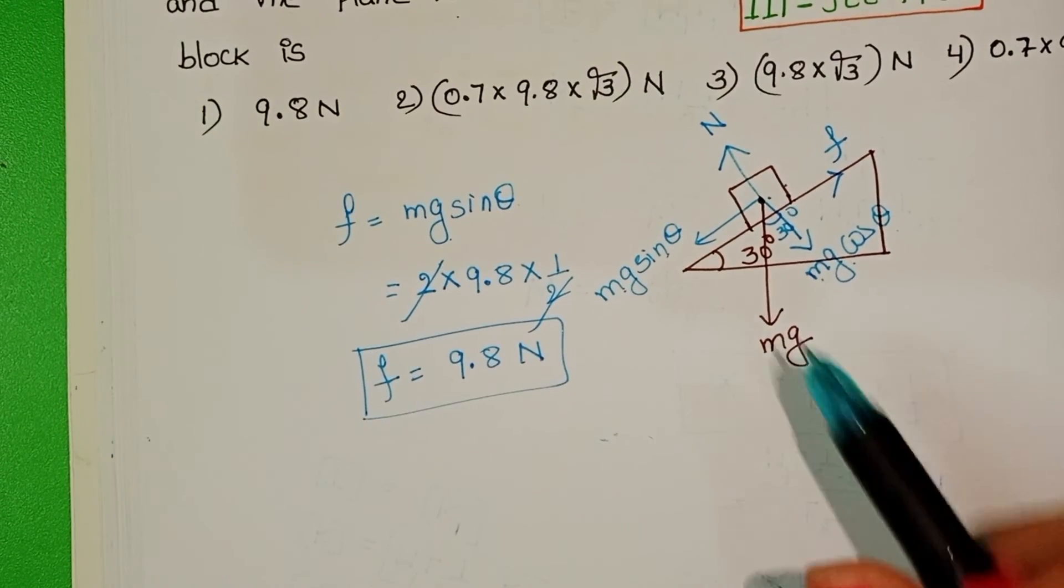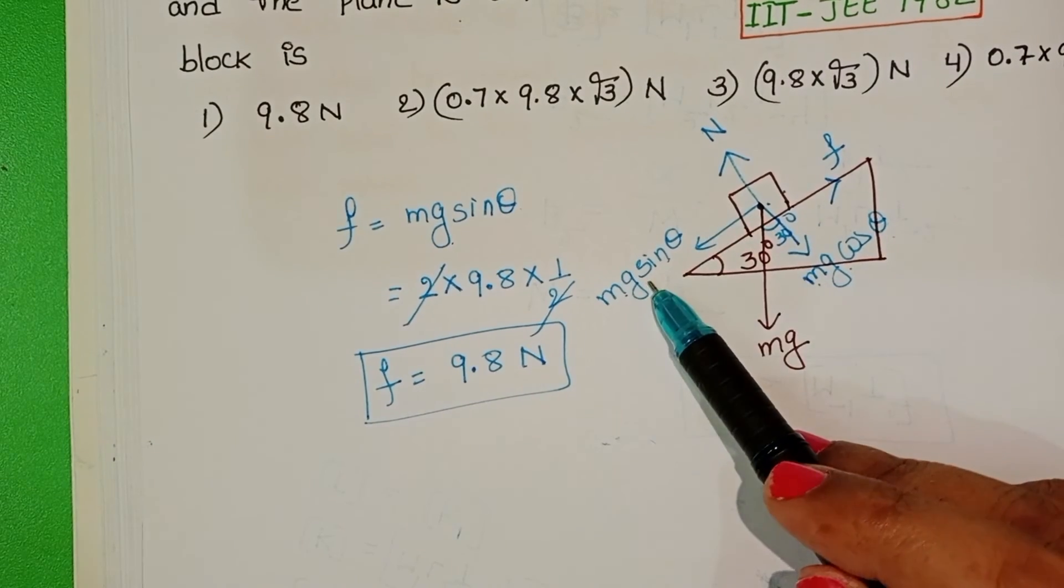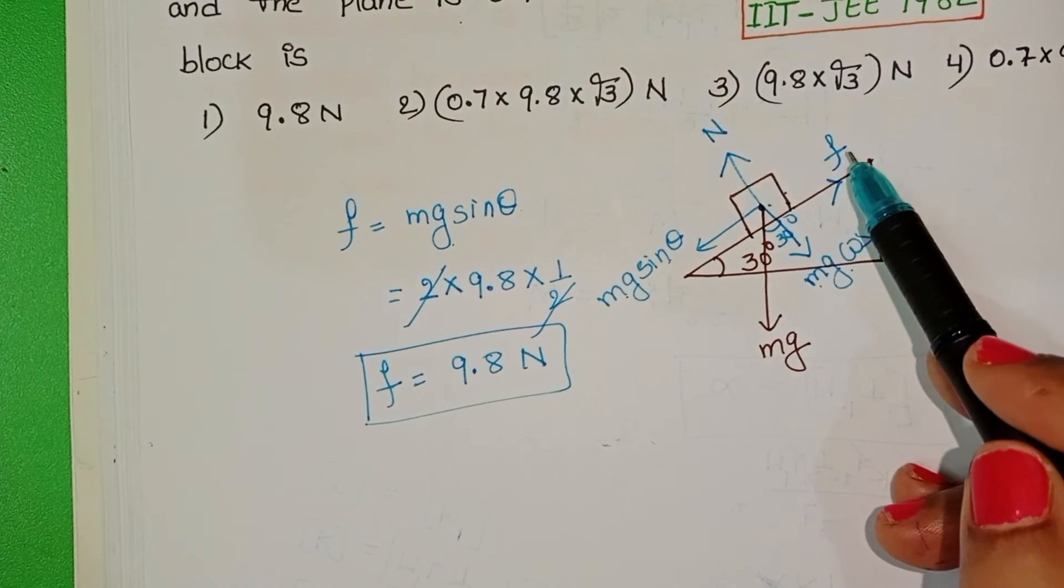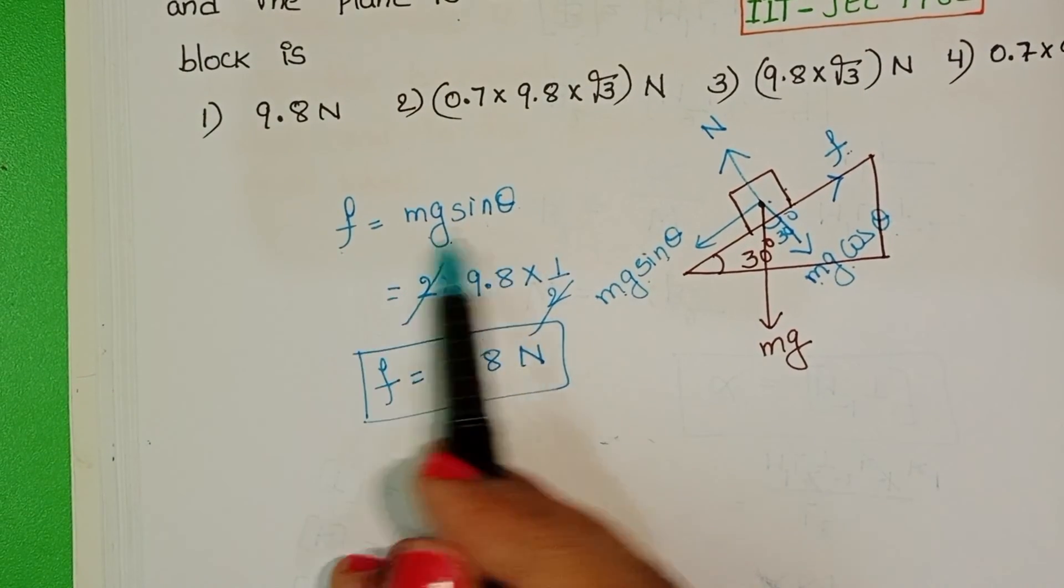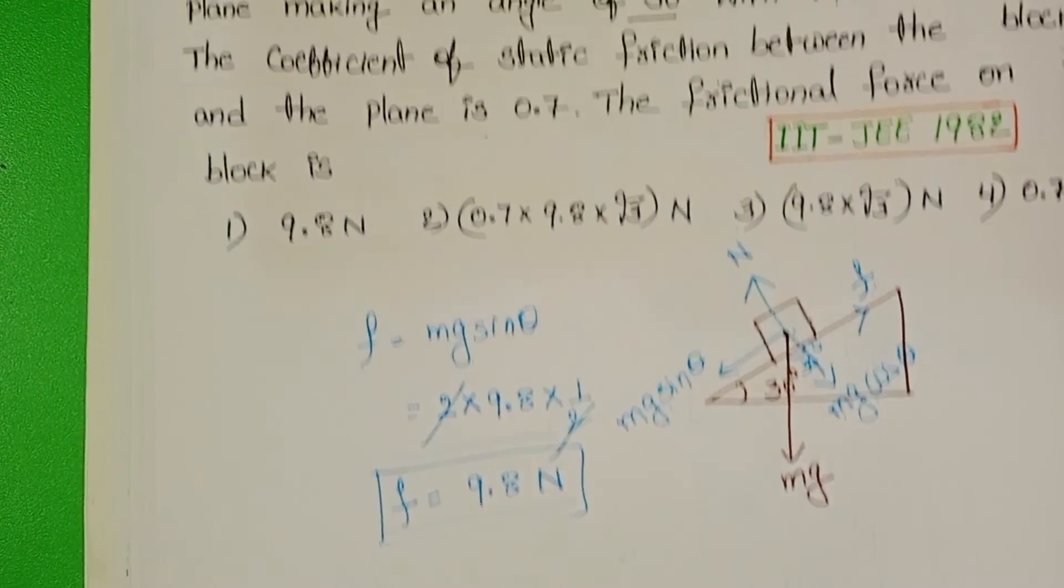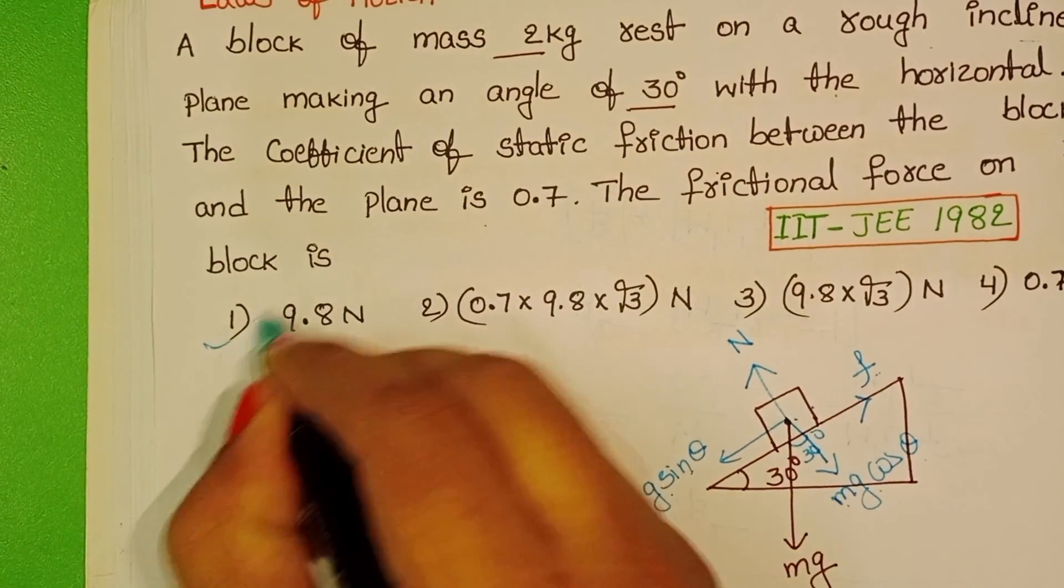Whenever block is at rest position, applied force is converted in the form of the frictional force. So that's why we are taking F equals mg sin theta. Check the given options. First option is correct.